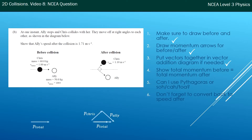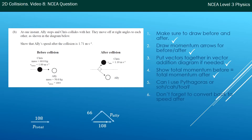Now I'm putting numbers on these values. Momentum is mass times velocity. For Chris before: 60 × 1.8 = 108 kg·m/s. After, Chris's speed is 1.1 m/s, so his momentum is 66 kg·m/s. The value of 108 is the total momentum before the collision — and that equals the total momentum after the collision as well, which is part of that triangle.